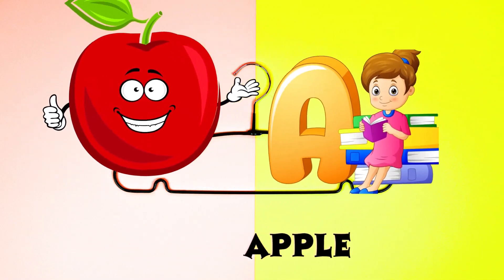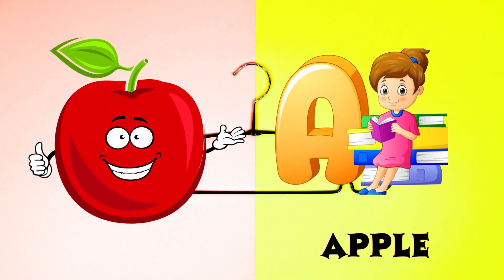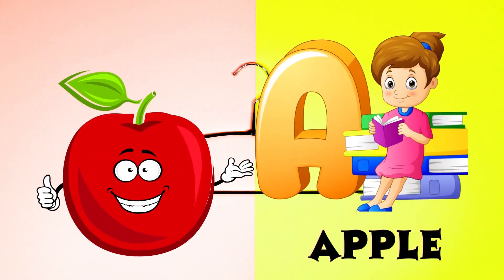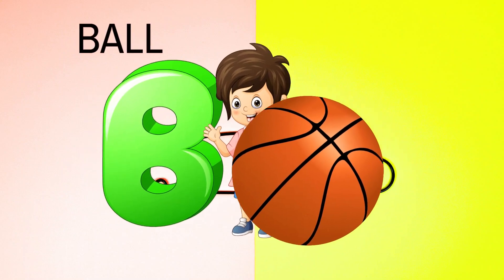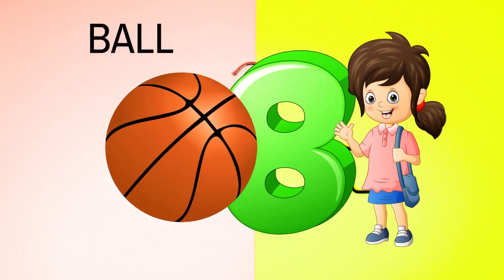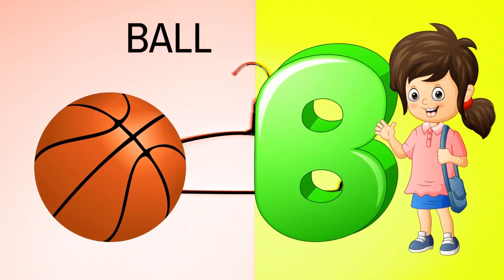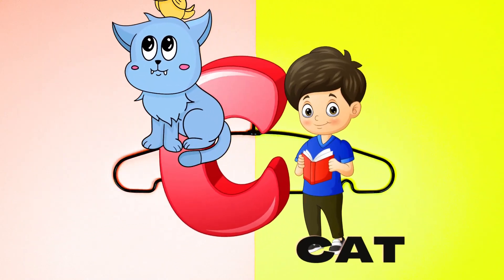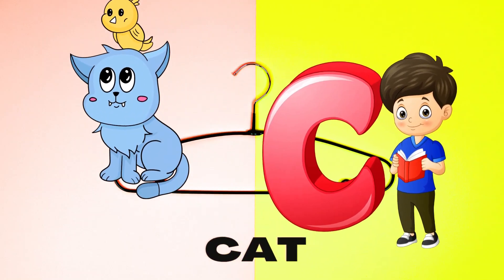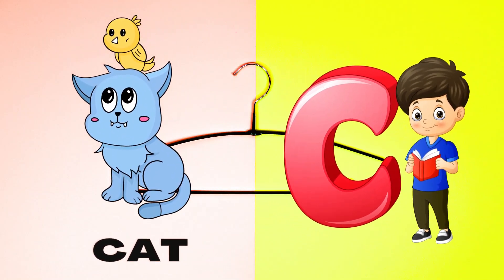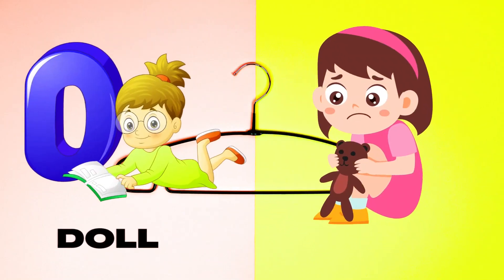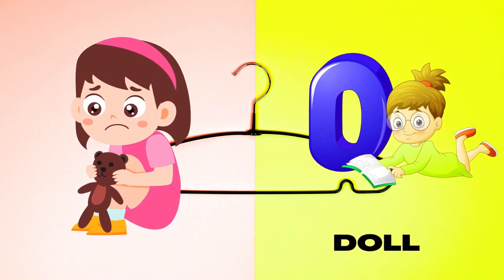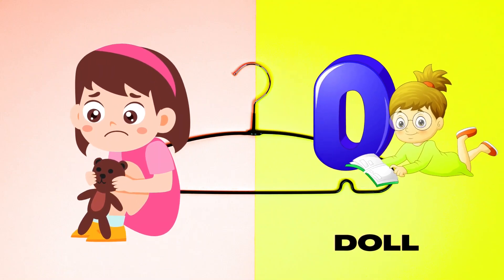A is for Apple, A-A-Apple. B is for Ball, B-B-Ball. C is for Cat, C-C-Cat. D is for Doll, D-D-Doll.